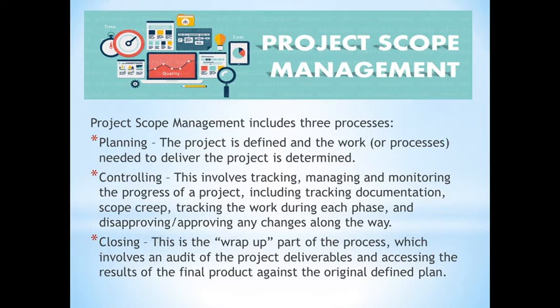Controlling involves tracking, managing, and monitoring the progress of the project — including tracking documentation, scope creep, and the work during each phase — and approving or disapproving any changes along the way. Controlling is the most critical process because change is inevitable. The last process is closing, which is the wrap-up involving an audit of project deliverables and assessing the results of the final product against the original defined plan.